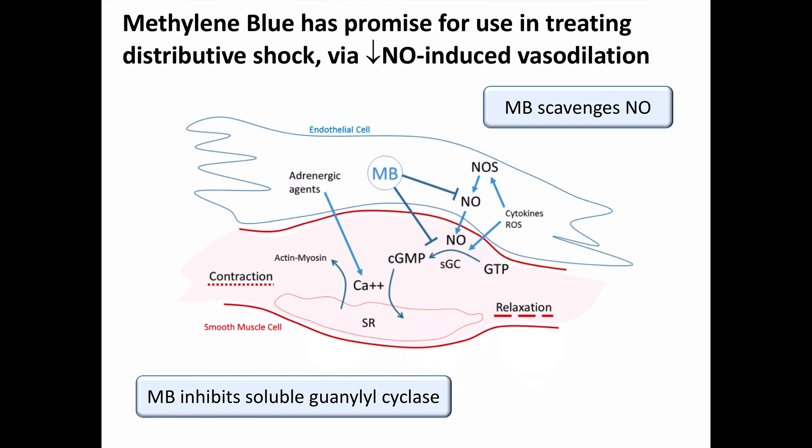There is a growing body of evidence suggesting a potential role for methylene blue in treating distributive shock — that is, shock due to decreased vasomotor tone. Methylene blue has two mechanisms of action here: it can scavenge nitric oxide, decreasing its downstream signal, and it can inhibit soluble guanylyl cyclase. Both actions inhibit nitric oxide-induced vasodilation, resulting in relatively more vasoconstrictive tone to raise blood pressure and improve perfusion.